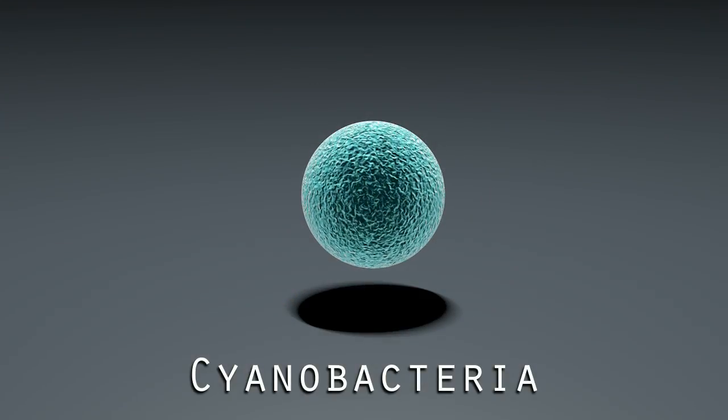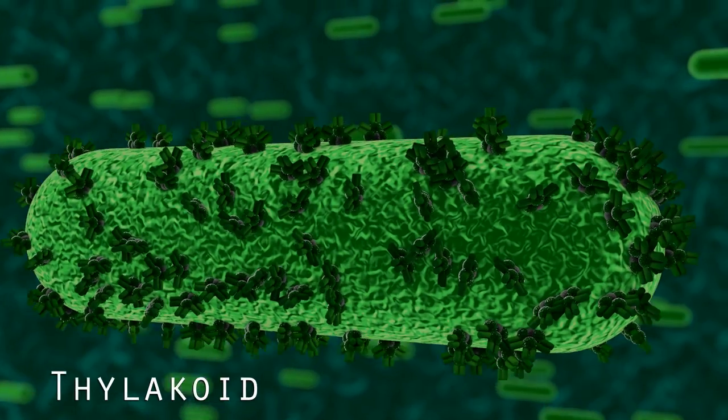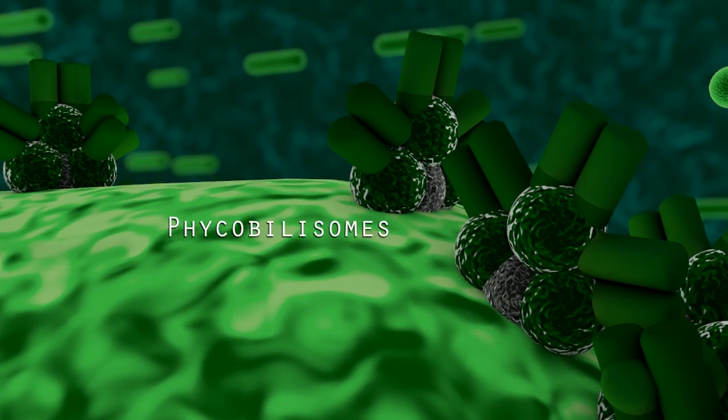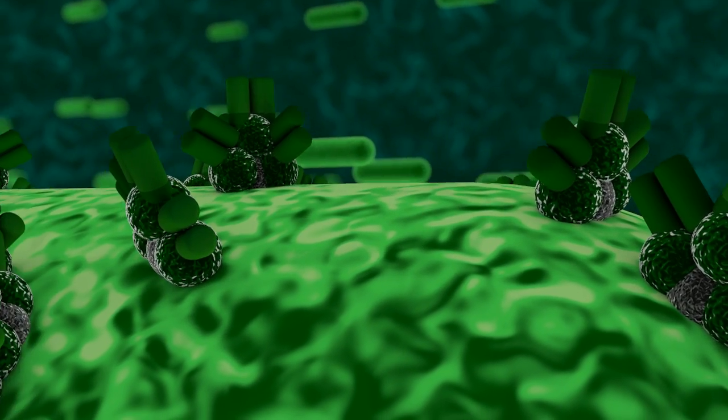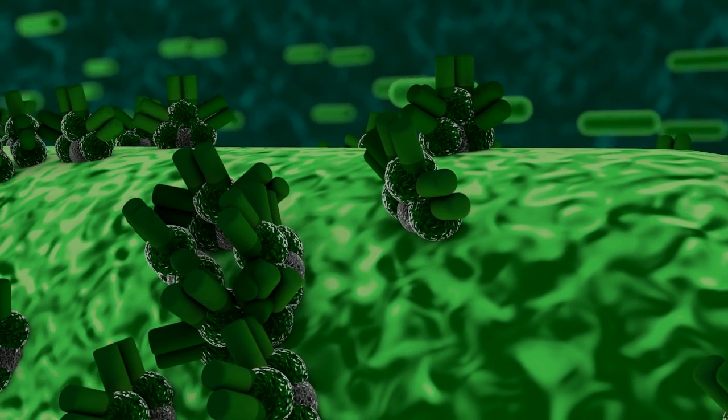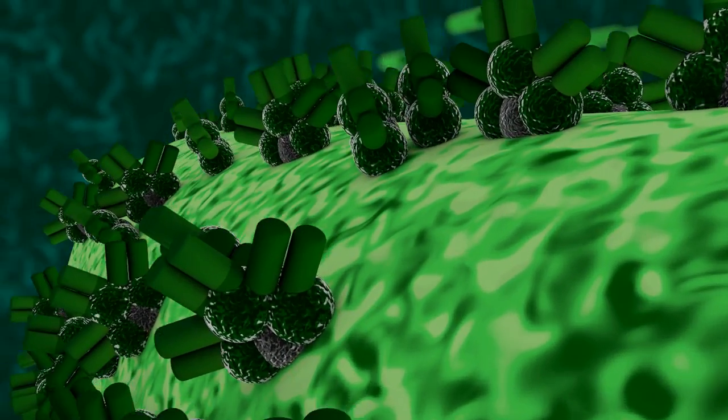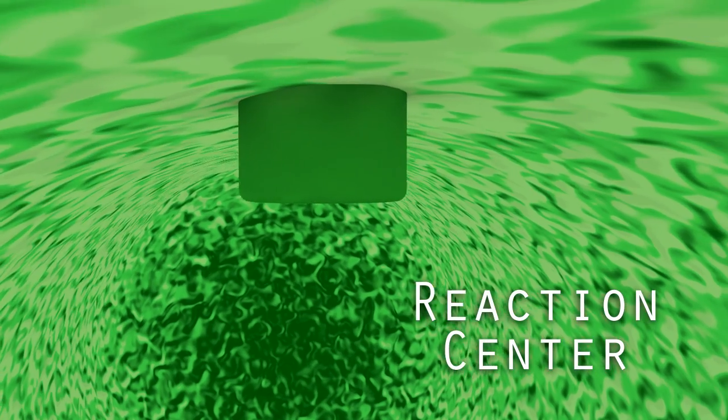Cyanobacteria share a similar electron transfer mechanism with that of plants, but have different photosynthetic structures. Cyanobacteria have free-floating thylakoids in the chloroplast with bundles of chlorophyll called phycobilosomes dispersed along its membrane. The phycobilosomes channel light toward the reaction center to begin the same electron transfer found in plants.